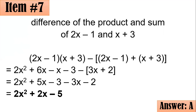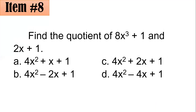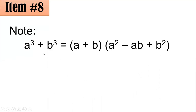Let's move on to item number 8. Find the quotient of 8x cubed plus 1 and 2x plus 1. Is it A, B, C, or D? There are many ways: synthetic division, long division, or factoring if the divisor is a factor of the dividend. Remember that a³ plus b³ equals (a plus b)(a squared minus ab plus b squared). Applying this, for 8x cubed plus 1, the cube root of 8x cubed is 2x, and the cube root of 1 is 1.